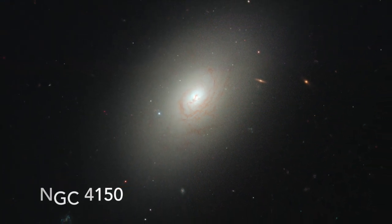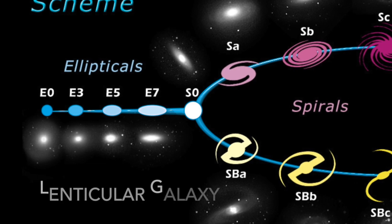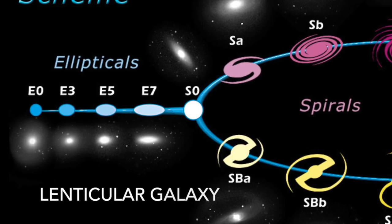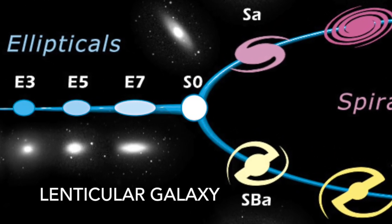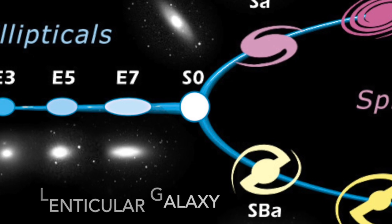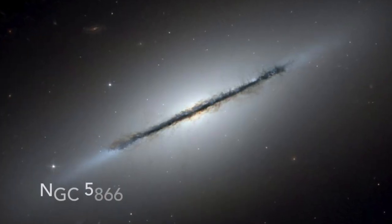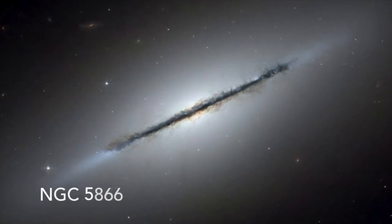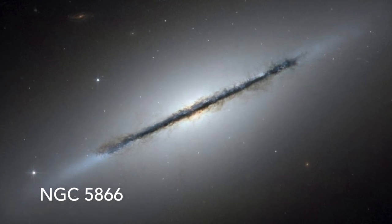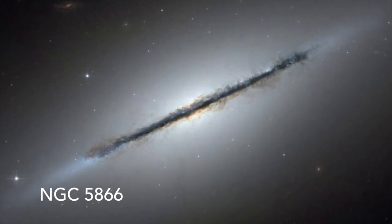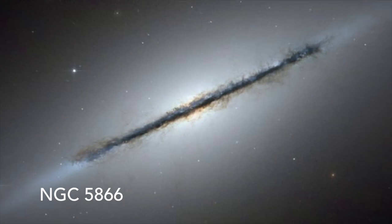In the middle of this diagram, S0, are what is known as lenticular galaxies — the intermediate phase bridging spiral and elliptical galaxies together. This type of galaxy contains a bright central bulge surrounded by a disk structure, but without any sort of spiral formation, containing ancient stars and very little interstellar gas.